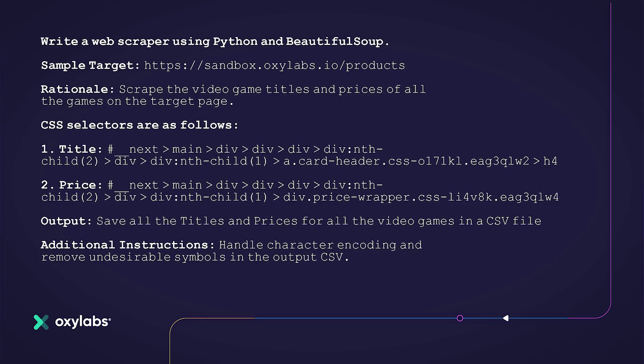The third step is to prepare the ChatGPT prompt. The prompt should be well explained, specifying the code's programming language, tools and libraries to be used, element selectors, output, and any special instructions the code must comply with. Here is a sample prompt that you can use to create the web scraper using Python and BeautifulSoup. Notice, we have provided CSS selectors for price and titles that we copied in the earlier step.